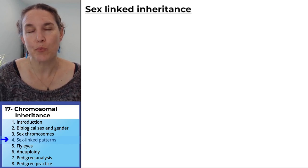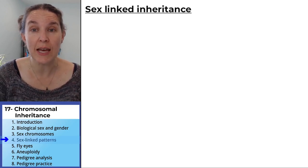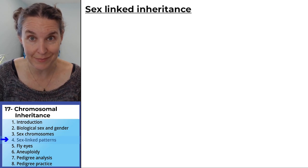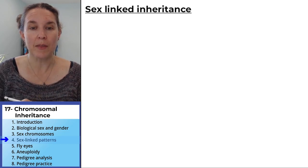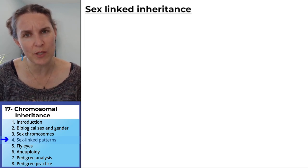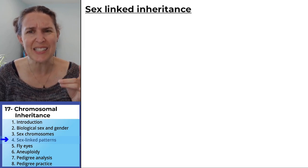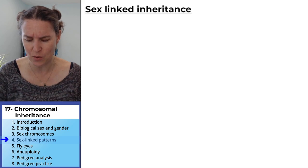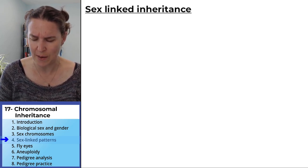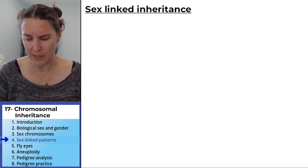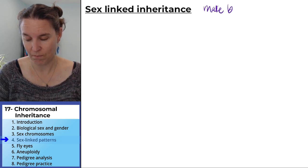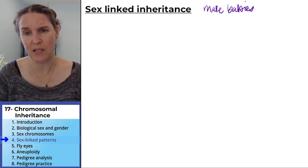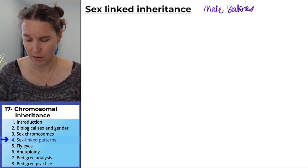We're going to start out by proving to ourselves that the chromosomes cause chromosomal sex and that the inheritance pattern for those chromosomes is actually the same. Let's run through our little Punnett Square rules. I'm just going to say we're going to make babies between an anatomical male and an anatomical female.